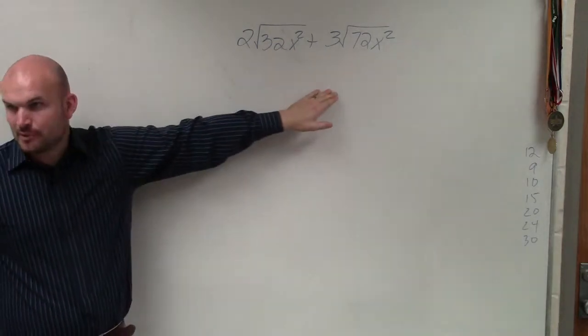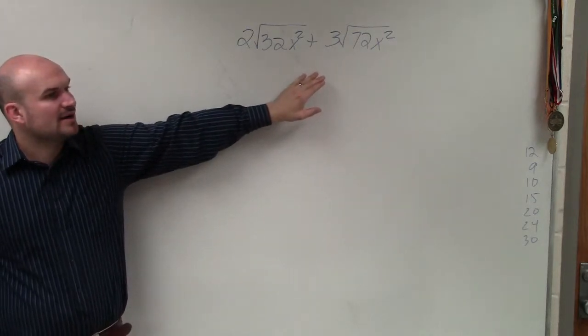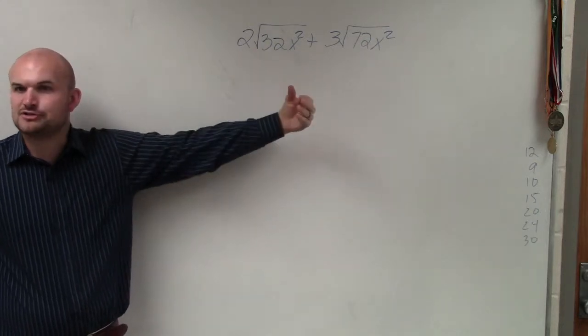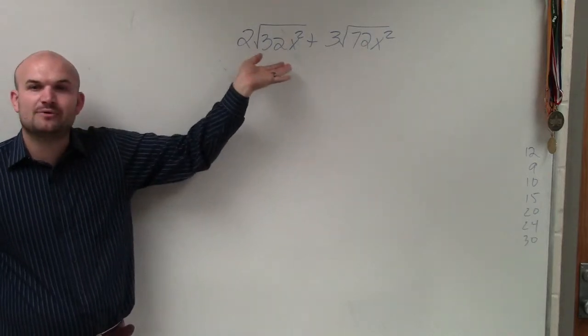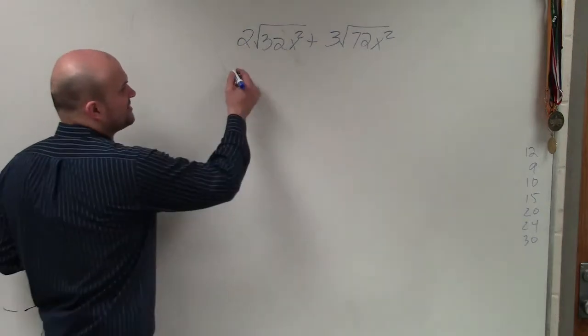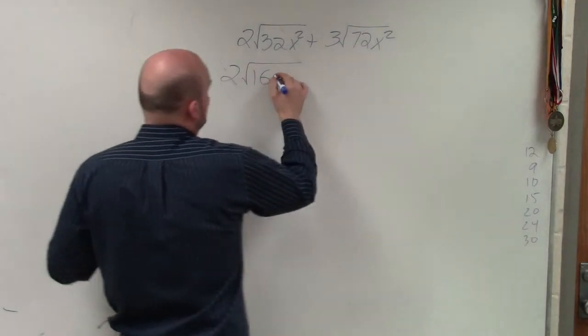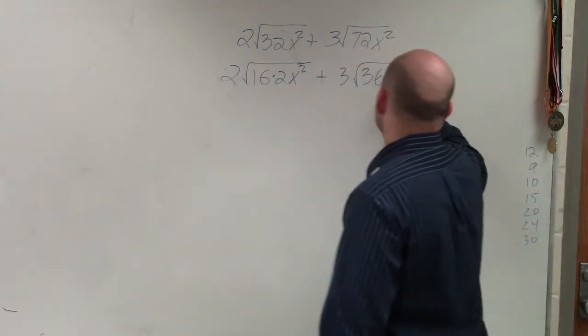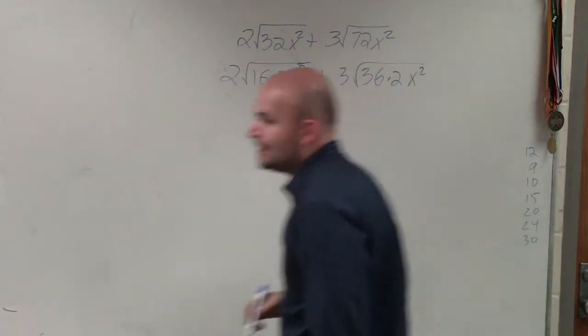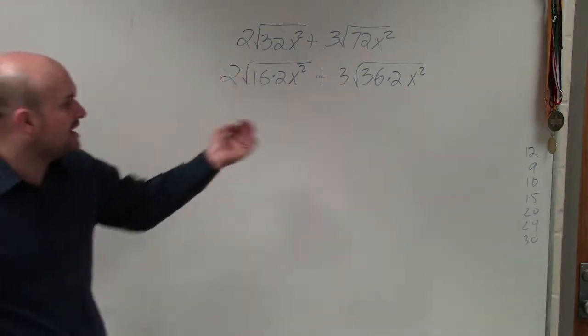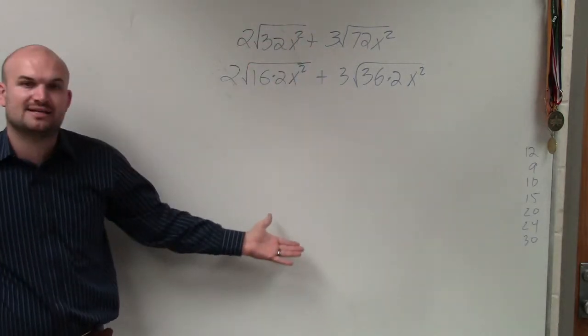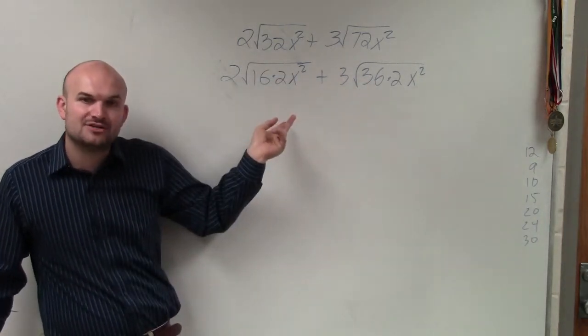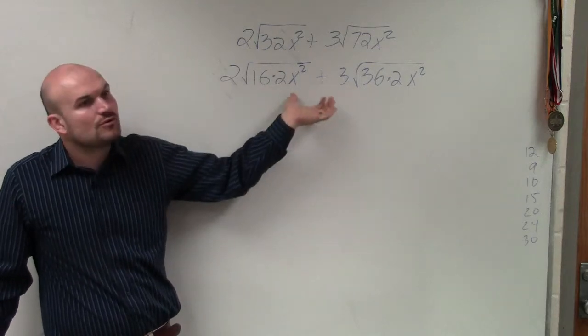You can use a factor tree for both of these, right? But as I've spoken about, when you have it as a square root, I think the easiest thing to do is if you're using a factor tree, what would the factor tree be with square numbers? So basically what I would do is I'd break this down into 16 times 2x squared plus 3 times 36 times 2x squared. And the reason why I like writing it down, instead of doing the whole factor tree until you break it down to prime numbers, if you can do the factor tree where you have square numbers as the factors, then you can just take the square root of those numbers.